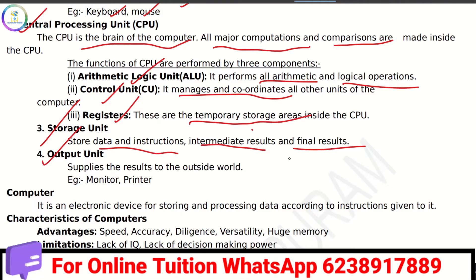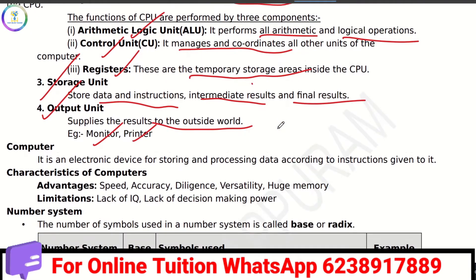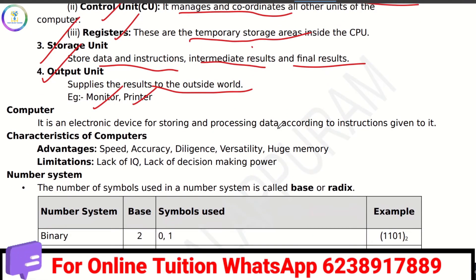The output unit supplies results to the outside world — for example, monitor and printer. A computer is an electronic device for storing and processing data according to the instructions given.